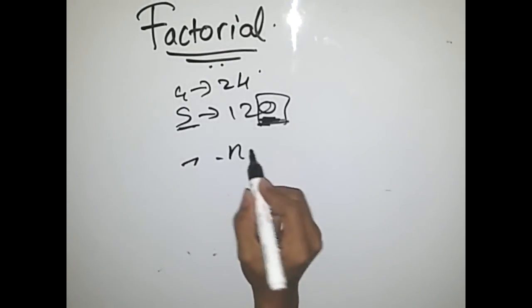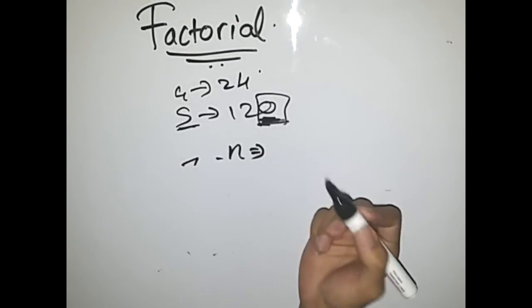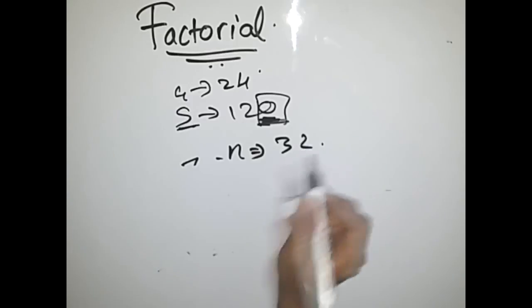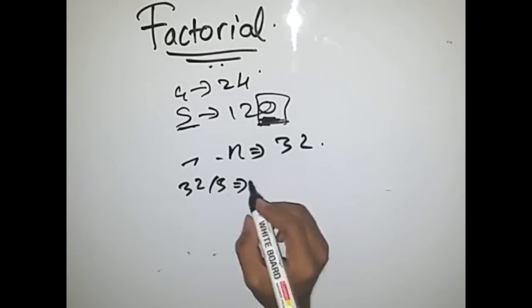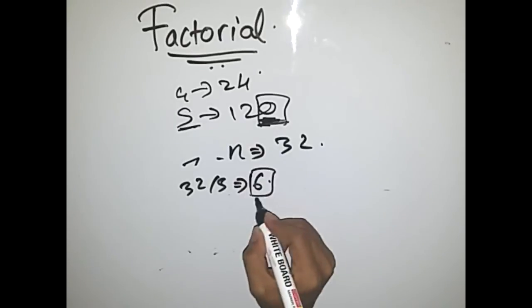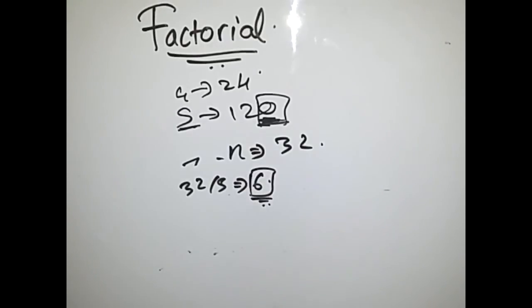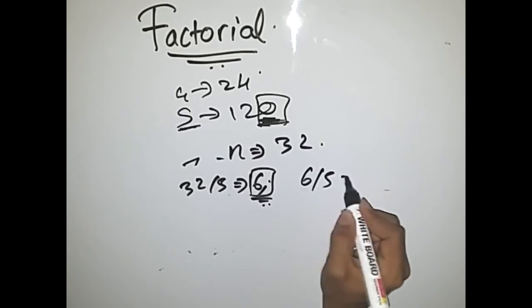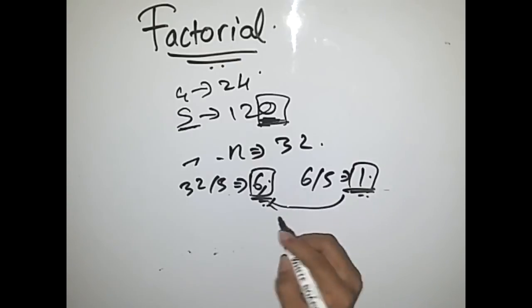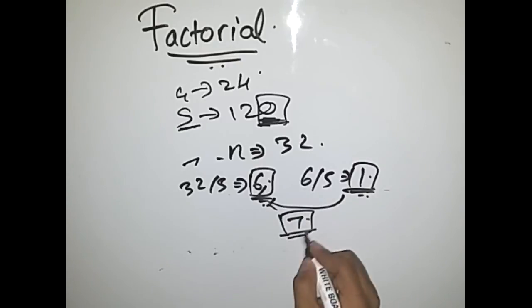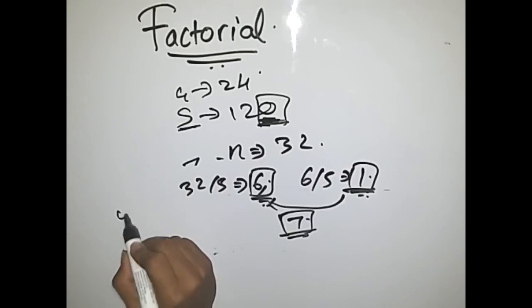Let's take another example: 32. 32 divided by 5 is 6, so store this 6 in a count variable. Again, 6 is greater than or equal to 5, so 6 divided by 5 is 1. Add it to the initial count, so total answer is 7. There are 7 zeros in the factorial of 32 at the end. You use a while loop.